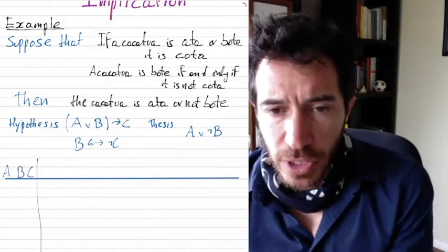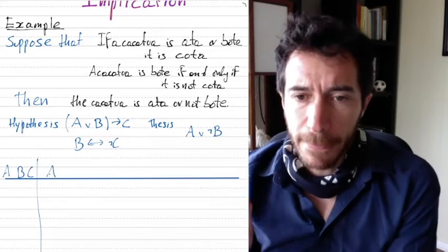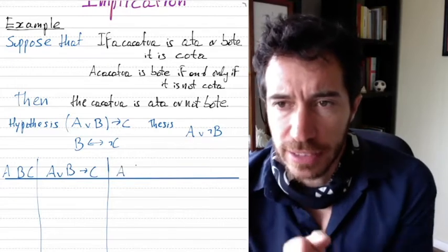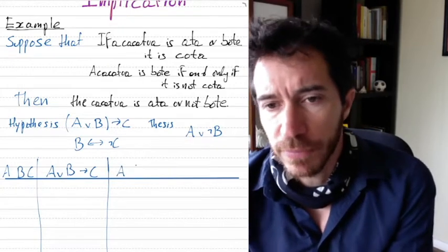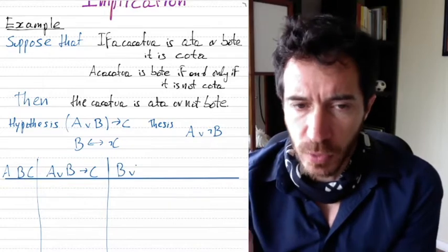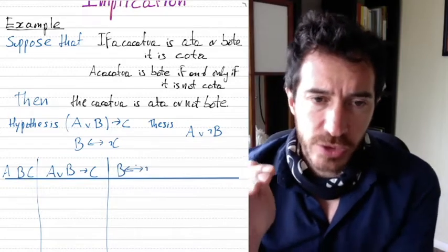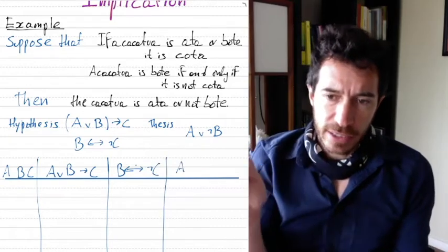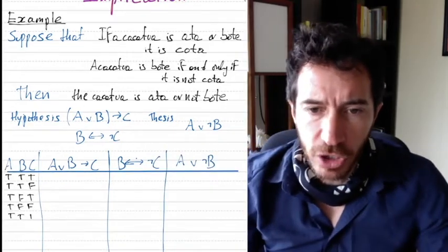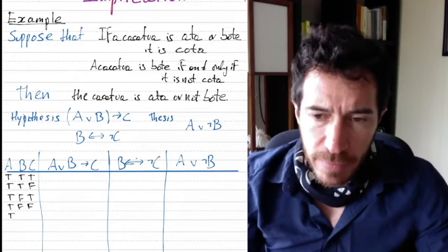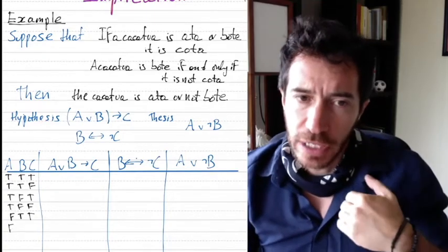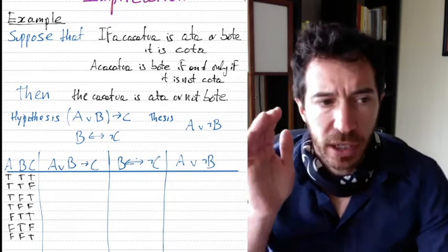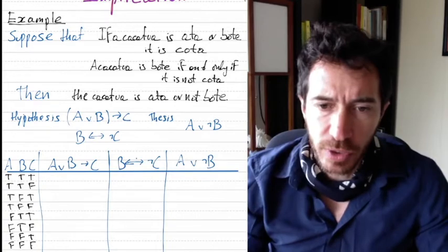The method uses a truth table. We start by writing the three variables A, B, and C, which stand for ata, bote, and cota. Then we write the three sentences we want to analyze, and we look at the truth values of all these formulas depending on the truth values of A, B, and C. We list all possible combinations for A, B, and C — each can be true or false — giving us eight combinations in total.